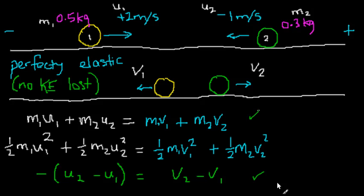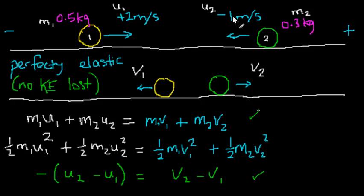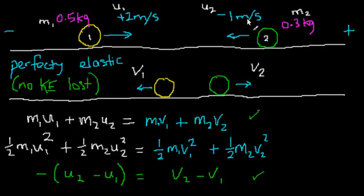Before actually using this, it's worth understanding the physical meaning of the difference in velocities. In physics, there's one way to describe the difference in velocities between two bodies — like u2 minus u1. Let's say this ball is at minus one meter per second, going to the left, and the yellow ball is going to the right at two meters per second.